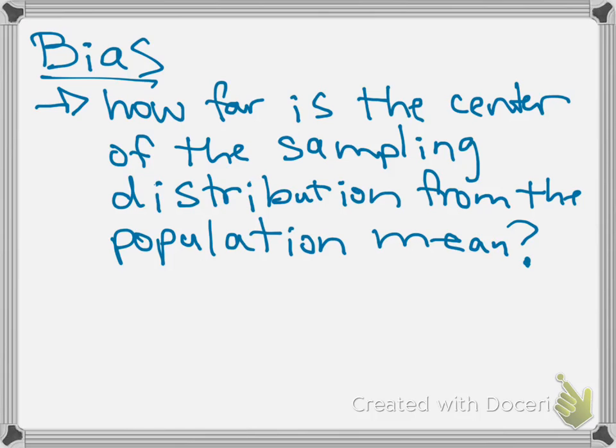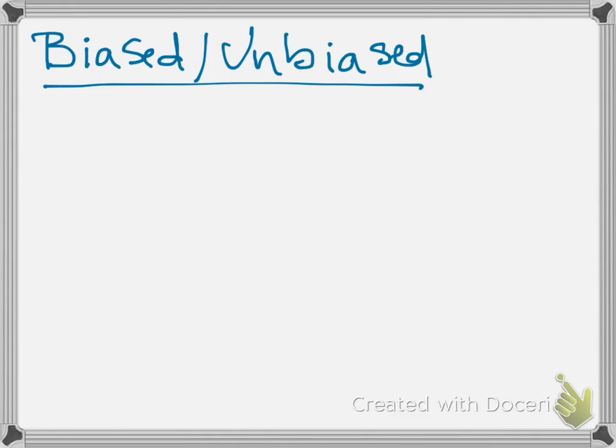You can think of bias as being related to the mean or the average of your sampling distribution. We would like for our sampling distribution to be unbiased. If we have an unbiased sampling distribution, that means the mean of it is very close to the mean of our population.